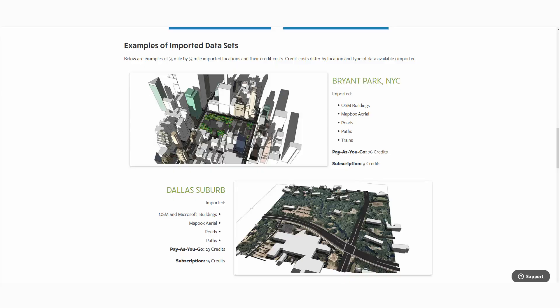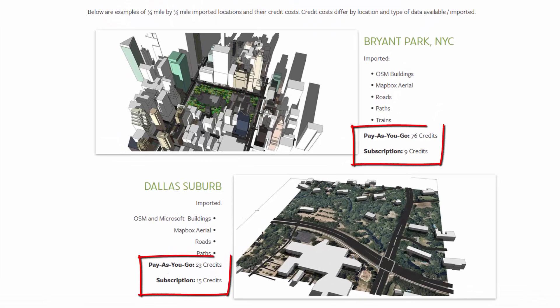I'm back on the Placemaker credit page, scrolling down to demonstrate the difference between pay-as-you-go and subscription credit costs for different data sets. All the examples are quarter-mile by quarter-mile with different data sets imported. The top one is Bryant Park — I imported OpenStreetMap buildings, a Mapbox aerial, OpenStreetMap trees, roads, paths, and trains, which are new in Placemaker version 3. This cost 76 credits using pay-as-you-go, versus 9 credits with a subscription.